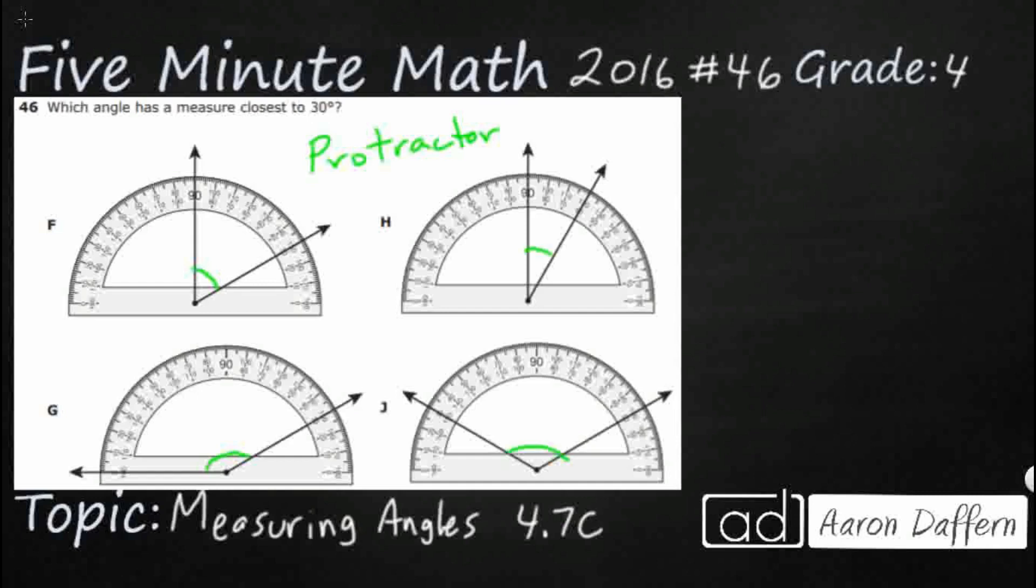Now we need to find something that is around or looks like it is 30 degrees. Now let's take a look at our three angles here. We've got acute, we've got right, and we've got obtuse because we can actually eliminate some of these options just by using our knowledge of angles.